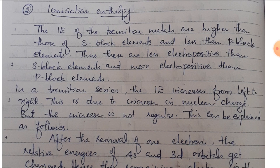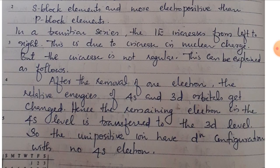In a given transition series, the ionization enthalpy increases from left to right. This is due to the increase in nuclear charge. However, the increase is not regular — there is an irregularity in the ionization enthalpy.